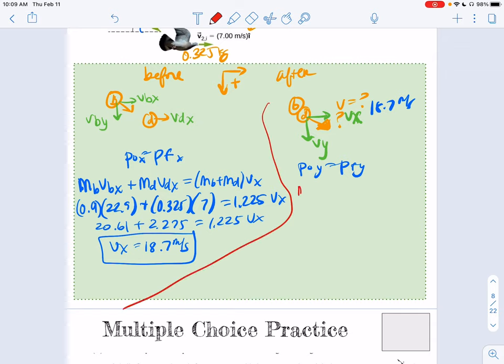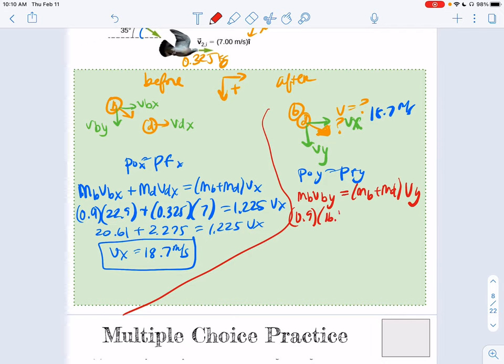Initially in the Y, I have MB VBY and that's it, because the dove is not moving in the Y at all. And then after I have their combined masses times VY. So 0.9 times 16.1 was the Y, 1.225 VY. 0.9 times 16.1 divided by 1.225. So the Y direction velocity is going to be 11.8.